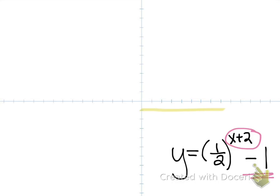If we put two of these shifts together, let's say y equals one-half to the x plus 2 minus 1. We have a vertical shift of down 1 and a horizontal shift of left 2. My asymptote now is going to move off of the x-axis and go down 1 to negative 1. This is the line that it's going to come really close to, but it can't touch.